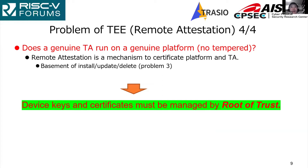The fourth problem is remote attestation, which certifies the hardware platform and target software. It resembles the third problem because remote attestation is the basis of installation, update, and deletion. Remote attestation depends on hardware keys and certificates, which should be managed by a secure coprocessor.